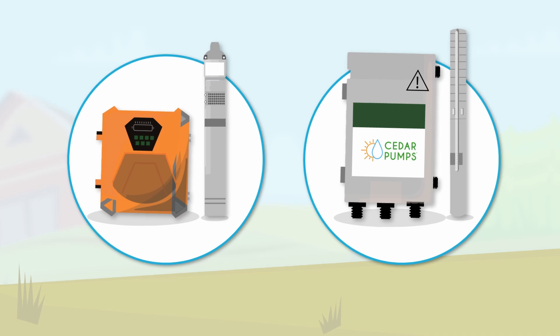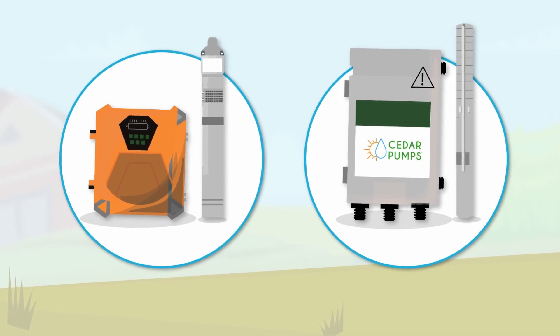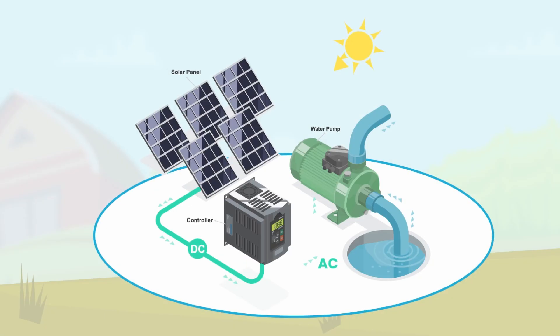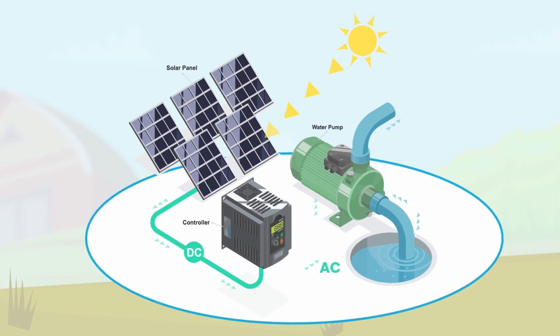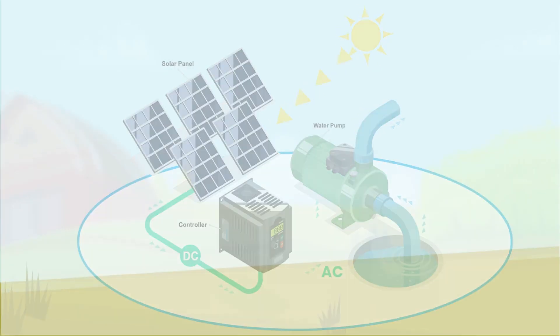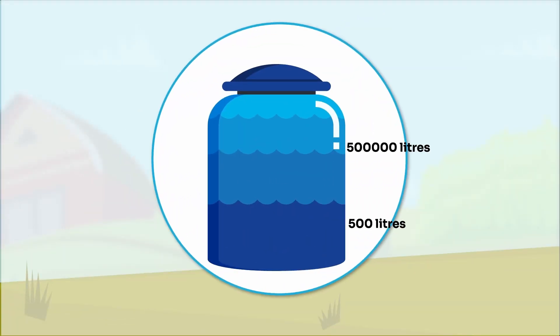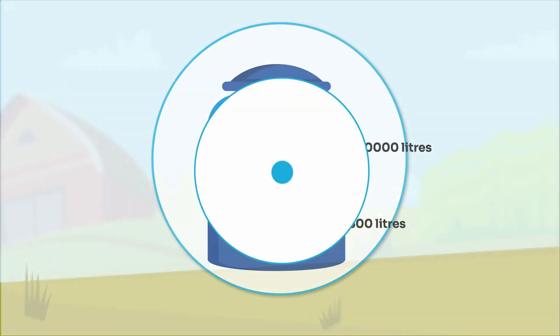Explore our pump ranges including DC solar pumps, AC-DC hybrid solar pumps and VSD drives for converting existing AC pumps to solar. Whether you need 500 litres or 500,000 litres a day, we have a solution for you.